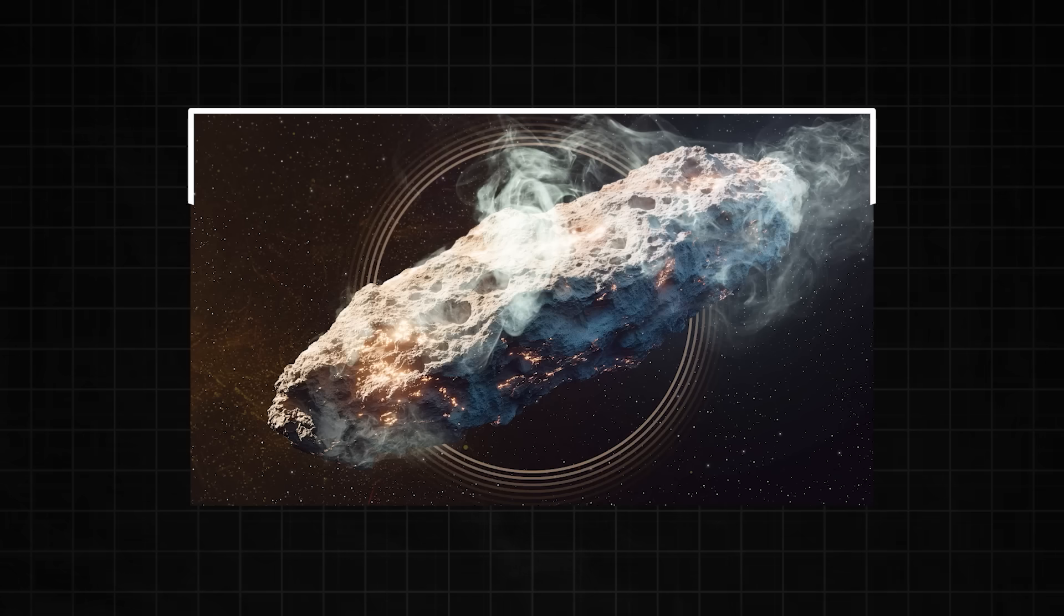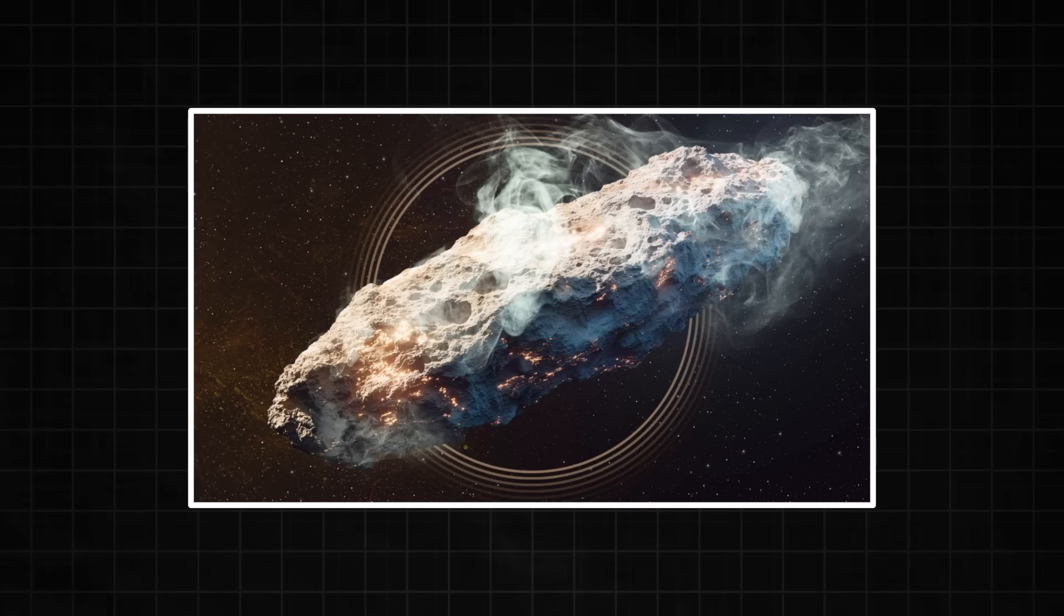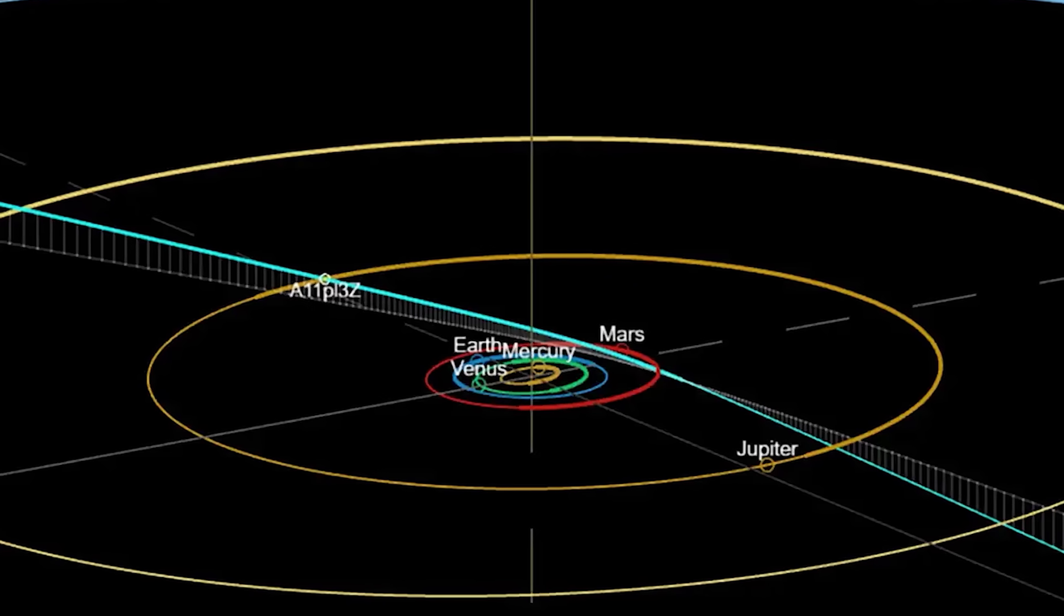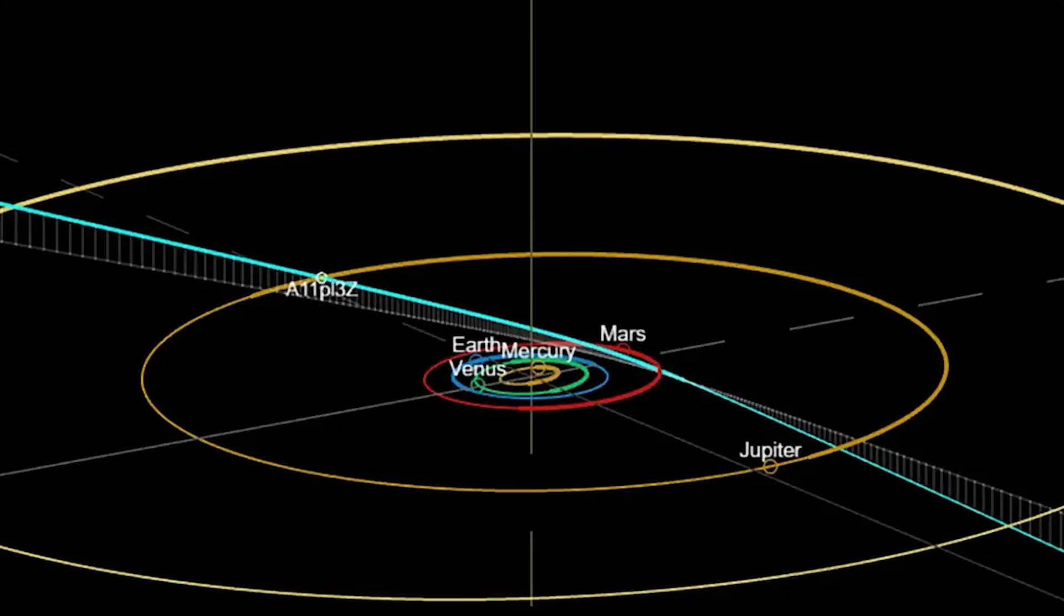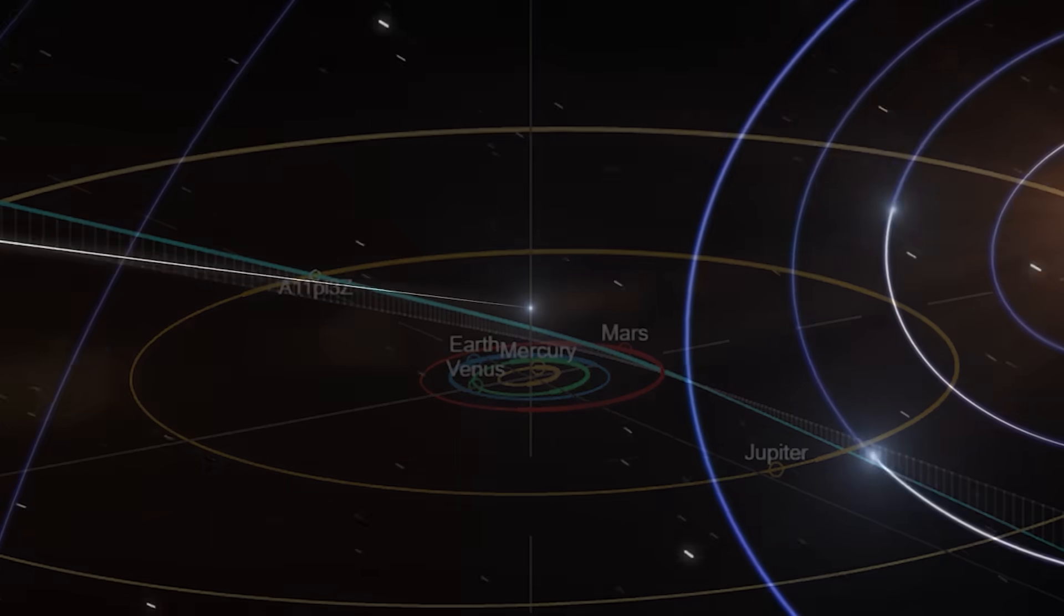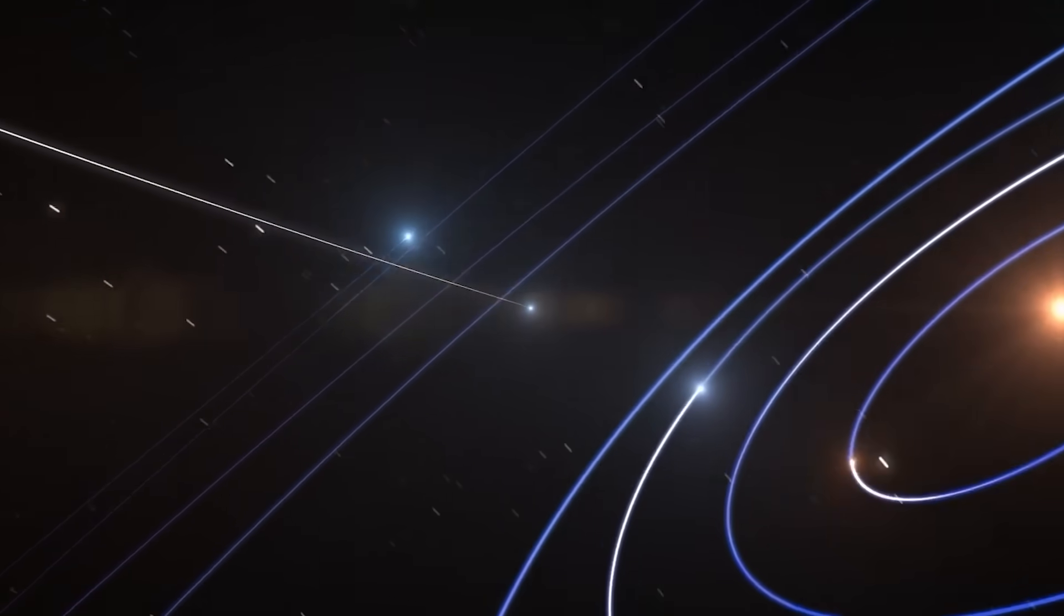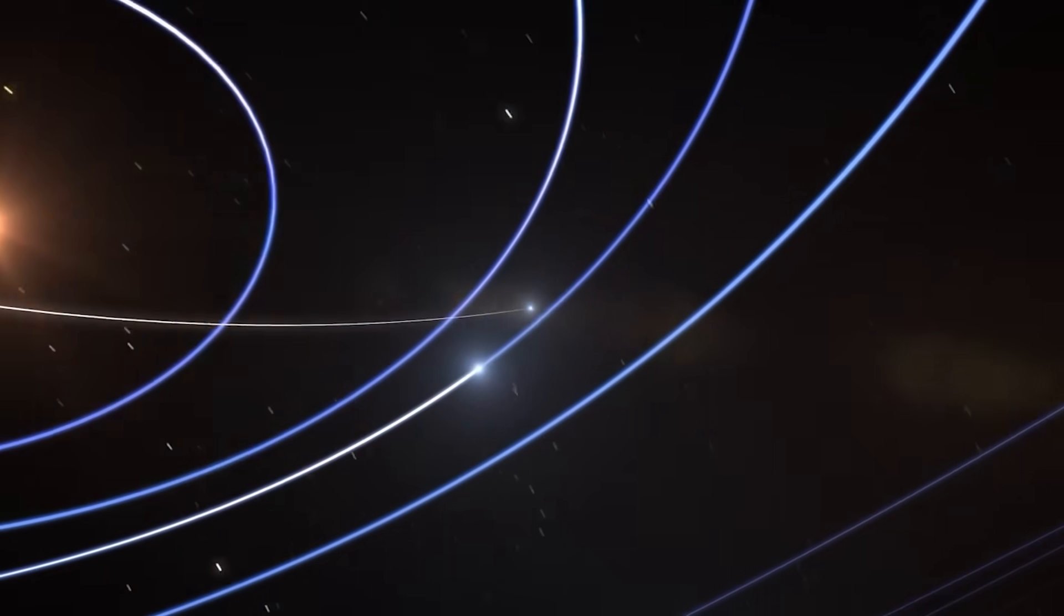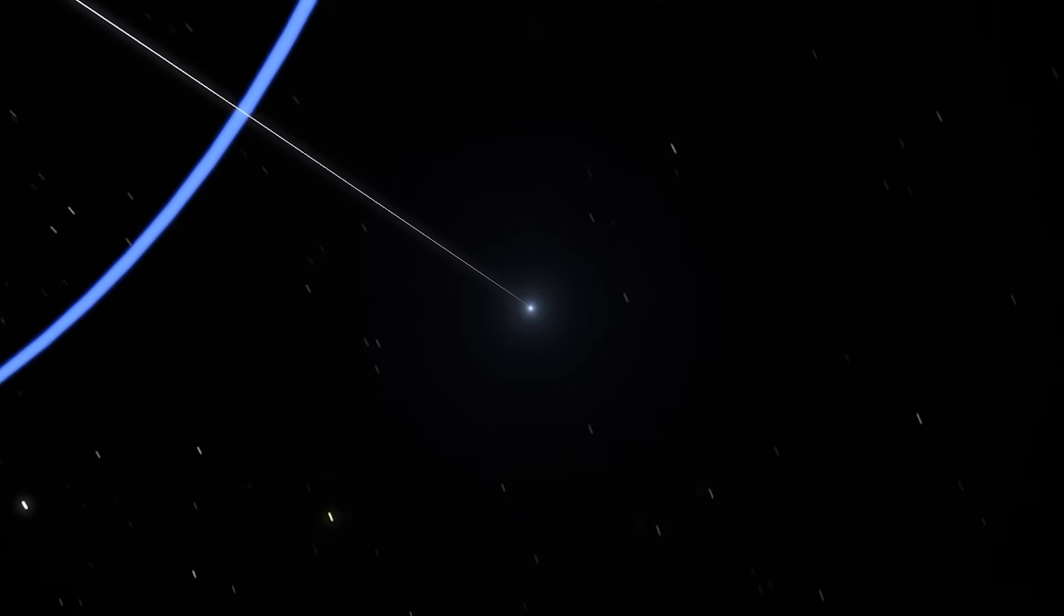It was a chunk of ice and rock, maybe the size of a small town, taking a tour of our sun's neighborhood before being flung back out into the void. But not all things are what they seem. As 3i Atlas rounded the sun and began its long journey back into interstellar space, something unprecedented happened.